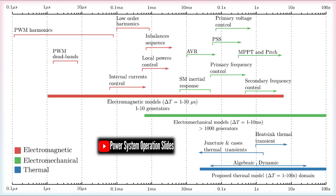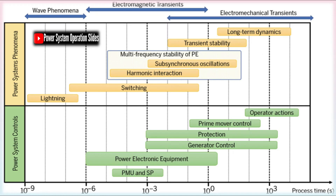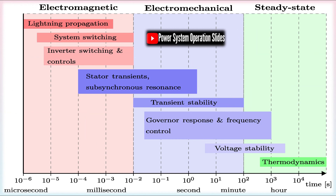Rotor angle stability concerns the maintenance of synchronism between synchronous generators. It reflects the ability of rotating machines to maintain a stable inter-machine angle during and after disturbances, which is essential for coherent system operation. Inverter-based stability pertains to the dynamic performance of systems with significant converter-interfaced, inverter-based renewable energy sources. This category addresses challenges such as fast control responses, reduced inertia, and interactions between inverters and the grid.